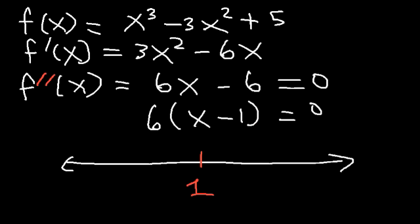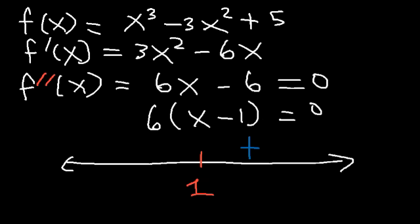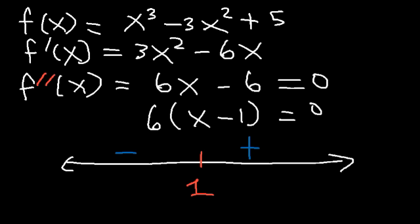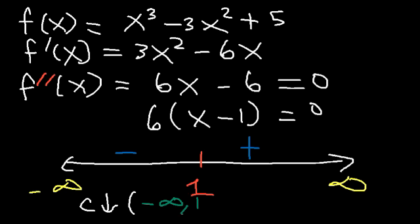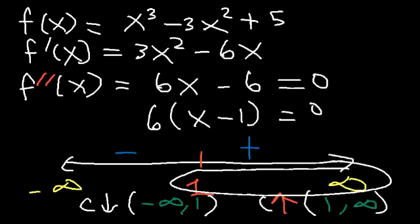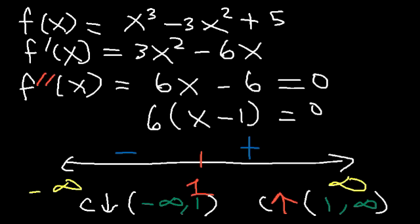Plug in a number greater than 1, say 2: (2-1) is positive times 6, giving a positive result. Plug in a number less than 1, say 0: (0-1) is negative times 6, giving a negative result. So the function is concave down on (-∞, 1) and concave up on (1, ∞). Because the concavity changes sign, x = 1 is an inflection point.